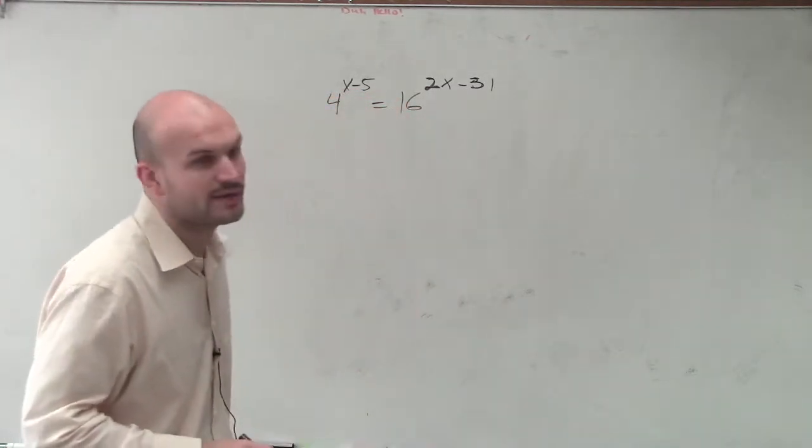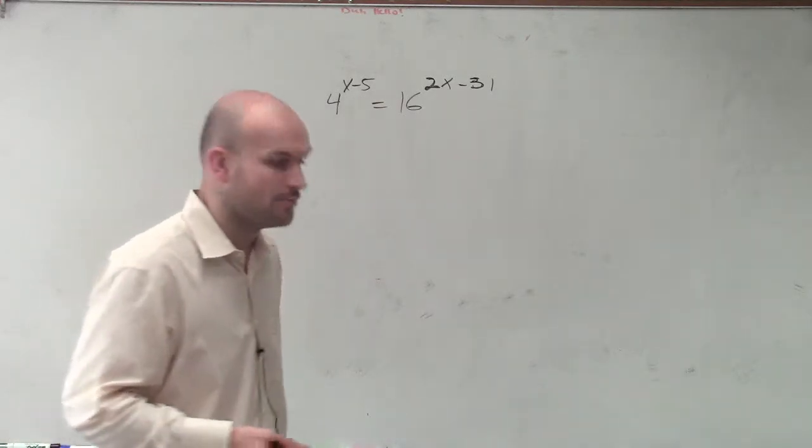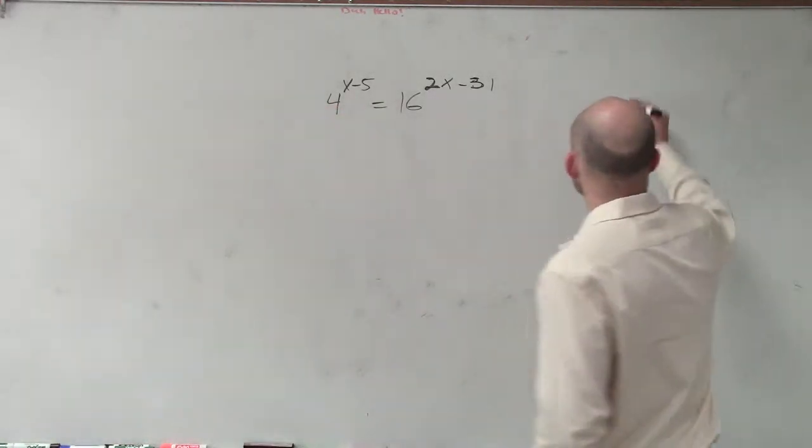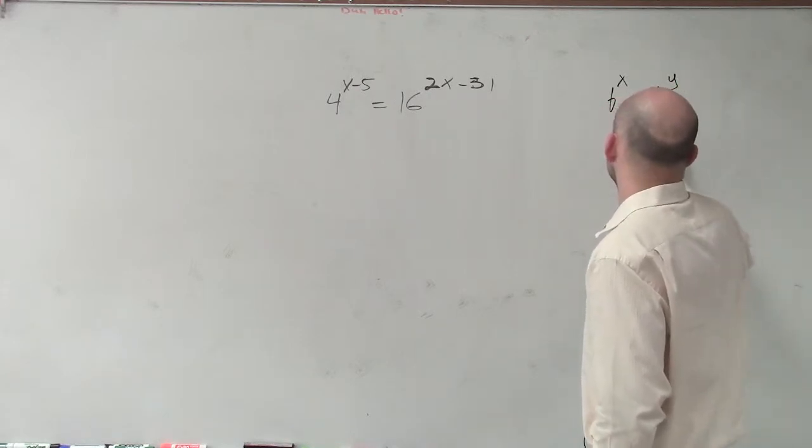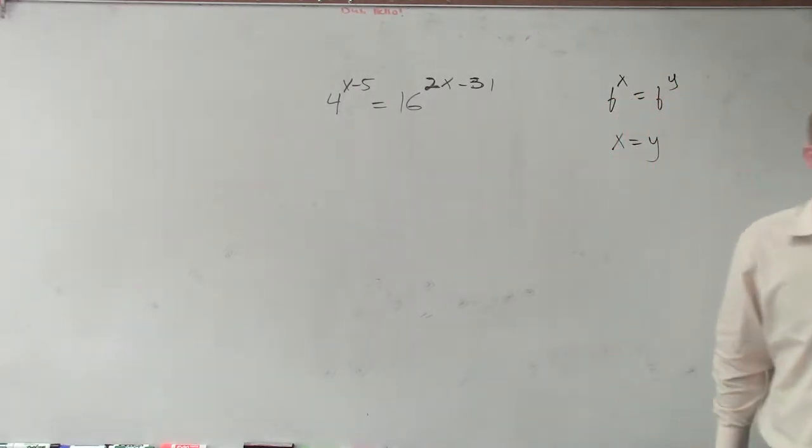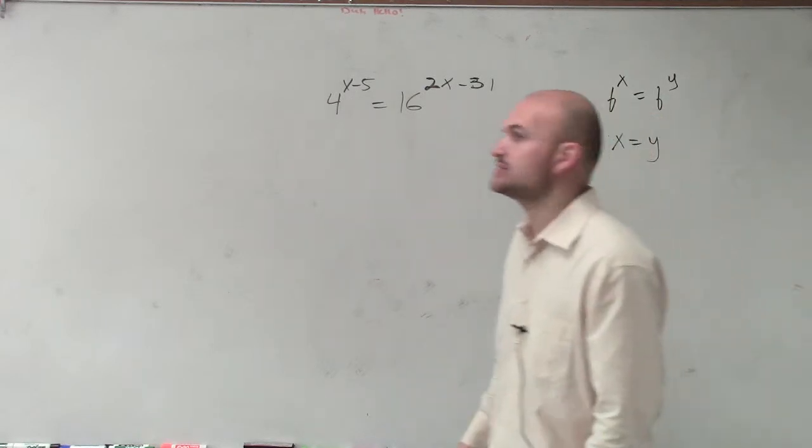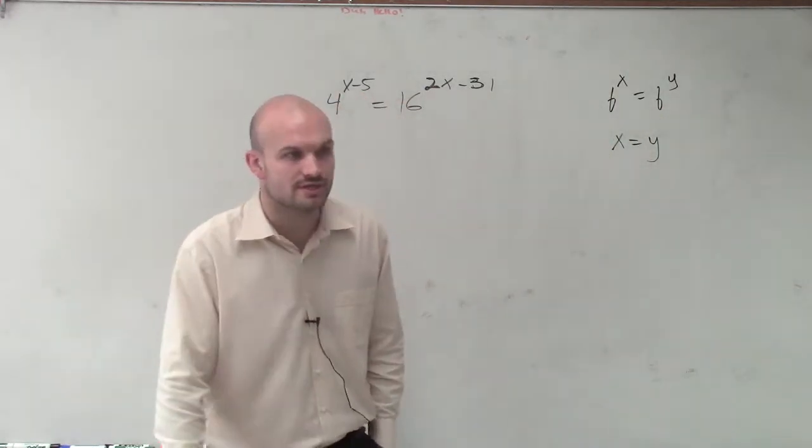And so therefore, we're going to want to make sure that we remember our property of equality, which states that if we have b to the x equal to b to the y, therefore we have x is equal to y, when obviously b is greater than 1 and b is not equal to 0, right?